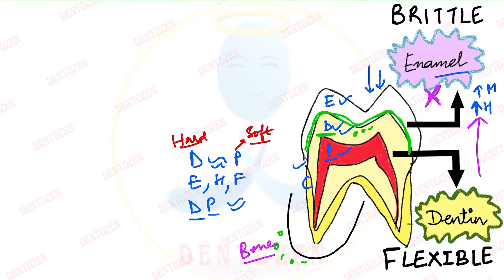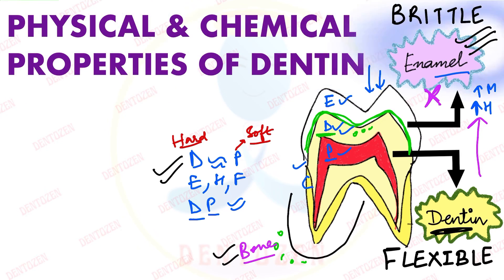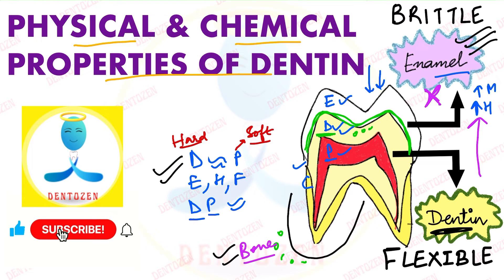Dentine provides support to enamel, is related to pulp, and shares some properties with bone — so we need to understand more about its properties. This video covers the physical and chemical properties of dentine.